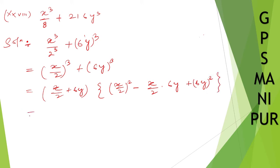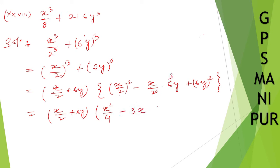Write it down as it is — open the bracket. So x/2 plus 6y, then opening the curly braces: (x/2) squared is x squared over 4, minus x/2 times 6y gives 3xy, so minus 3xy, plus (6y) squared is 36y squared. That is the answer.